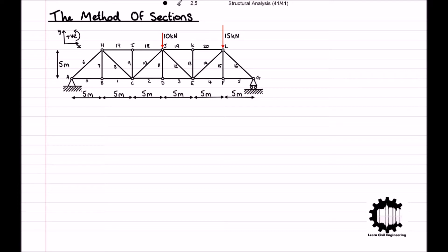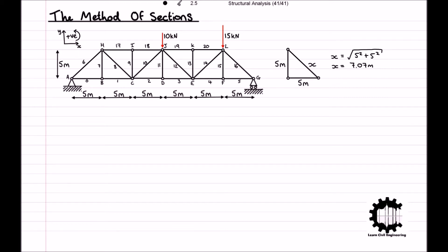Consider this truss which is in equilibrium. It is being supported by a hinge at point A and a roller at point G. Every horizontal and vertical bar is five meters long, and therefore using Pythagoras' theorem we can work out that each diagonal bar is approximately 7.07 meters in length. All bars are connected via hinges, and we have a vertical downwards load of 10 kilonewtons applied to node J and a vertical downwards load of 15 kilonewtons applied to node L.